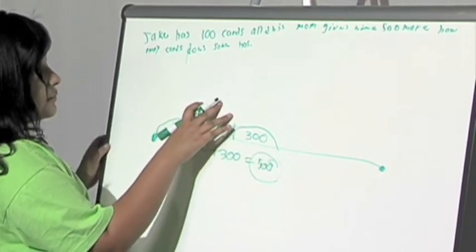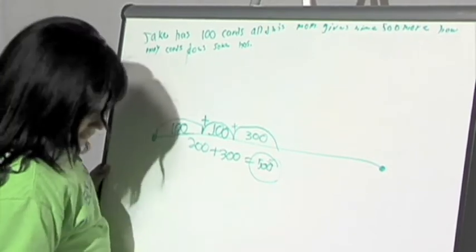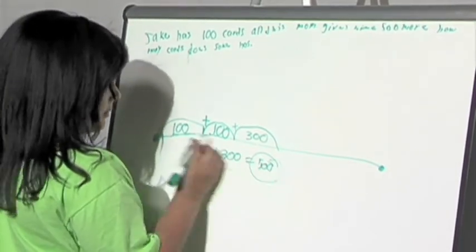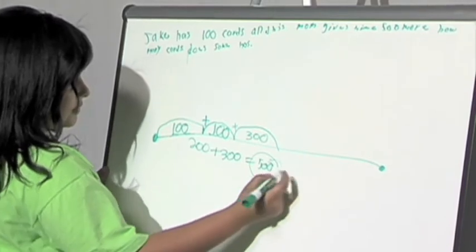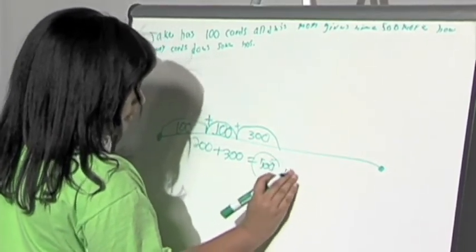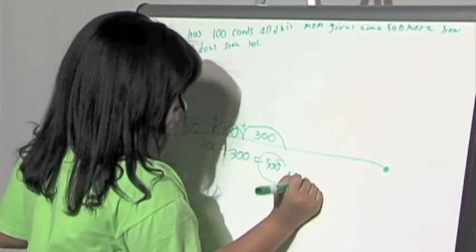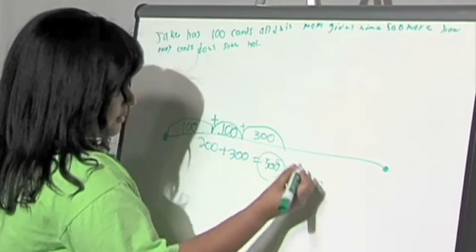So, if he has 500 plus 100, it equals... Wait, plus 100. So, 500 plus 100, it equals 600.